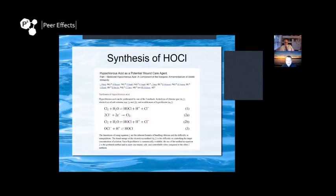There are a few different ways to synthesize hypochlorous acid. The preferred method uses chlorine gas, but we use salt — sodium chloride. You can buy it commercially, but I'm not going to talk too much about the equations because we're not here to learn chemistry; we're here to learn how to use it and make it.